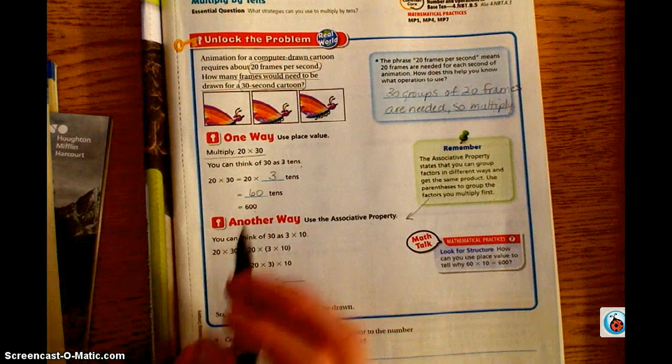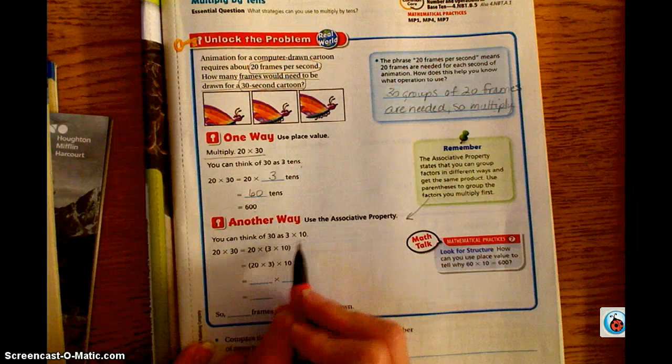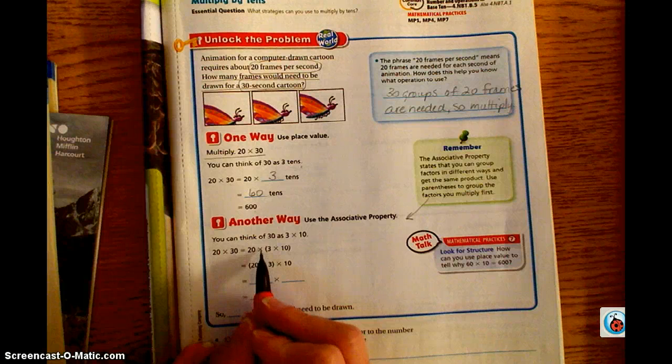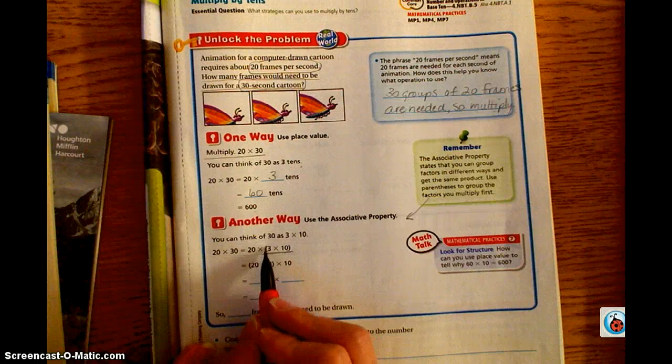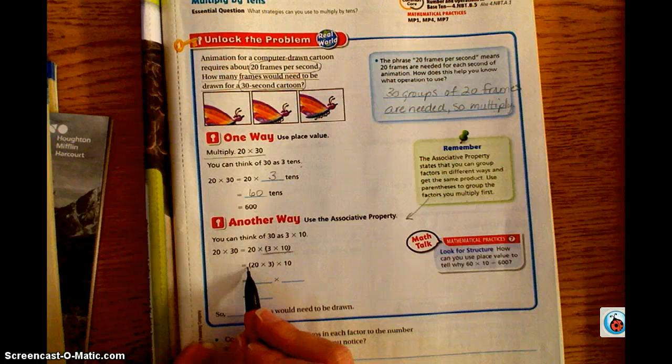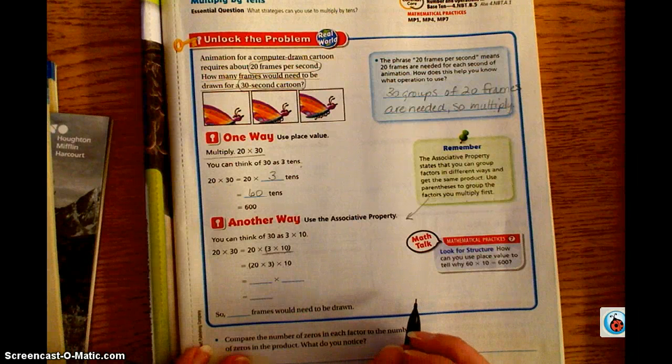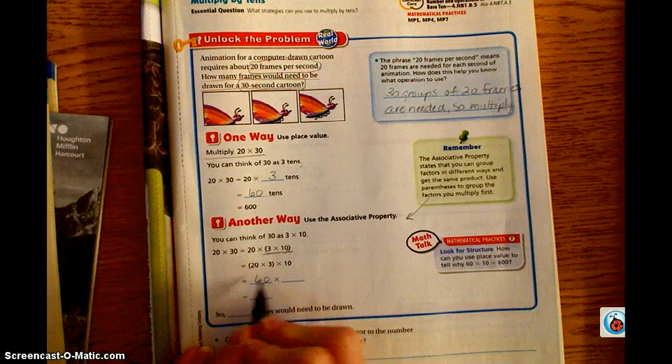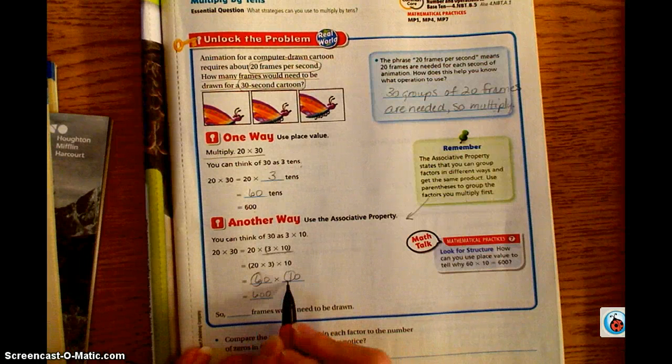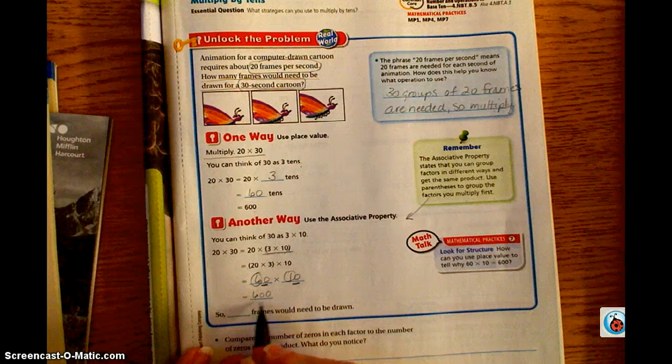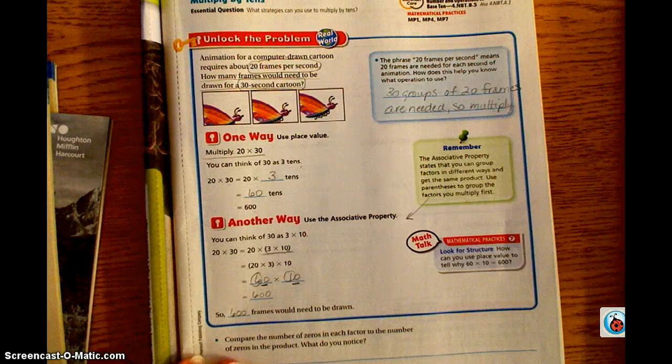Using the same problem, 20 times 30, you can think of 30 as 3 times 10. So basically we broke it into a smaller problem. 20 times 30 equals 20 times 3 times 10. The parentheses tell us that we're going to do this problem first. Parentheses are first. So this tells us that 60 times 10 equals 600. And it's simply mental math: 6 times 1 is 6, and then we have two zeros that we're going to bring down to our final product. So 600 frames would need to be drawn.